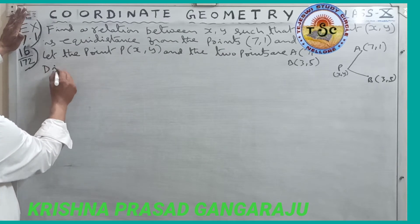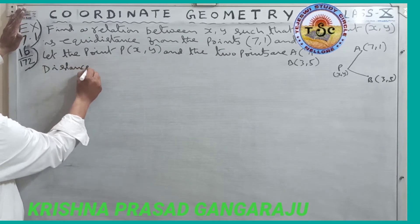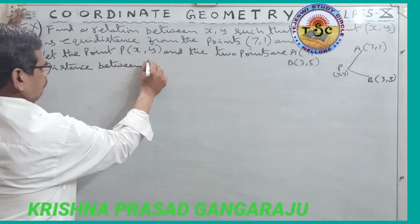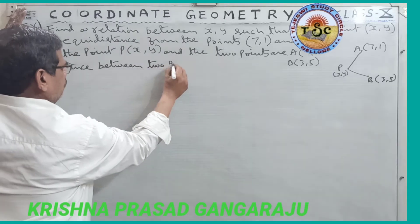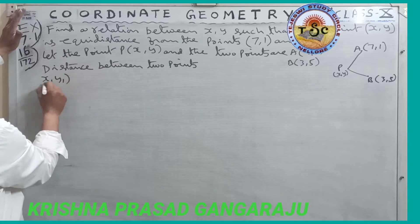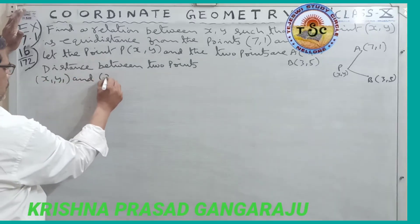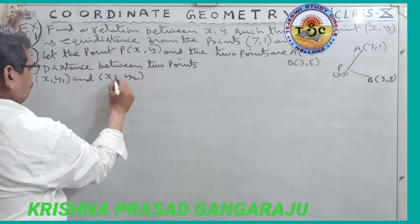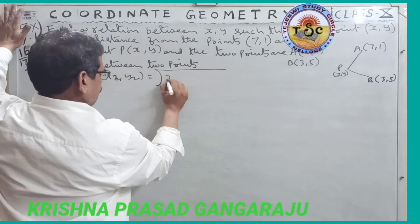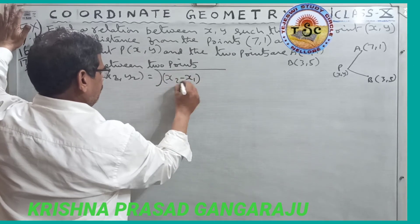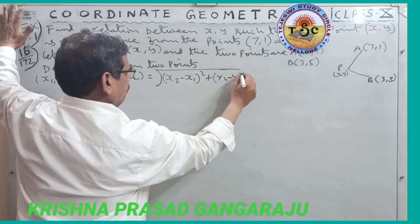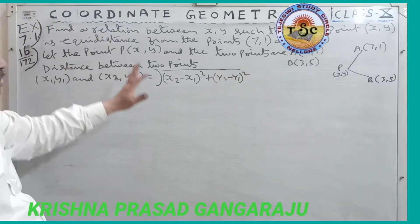The distance between two points (x1, y1) and (x2, y2) is equal to the square root of (x2 minus x1) whole square plus (y2 minus y1) whole square. That is the formula we will use.